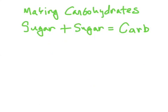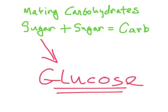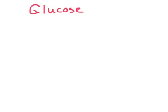I'm going to end this video with an example of making a carbohydrate from two sugar monomers. The type of sugar we're going to use today is called glucose. Glucose has the chemical formula C6H12O6 — that means there are six carbon atoms, twelve hydrogen atoms, and six oxygen atoms in the molecule.